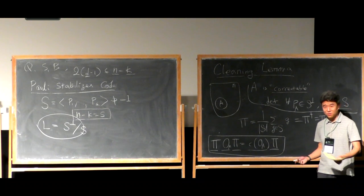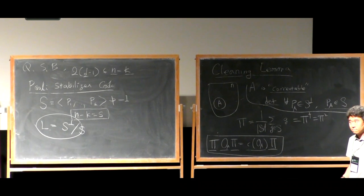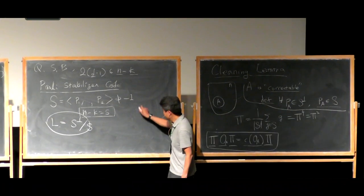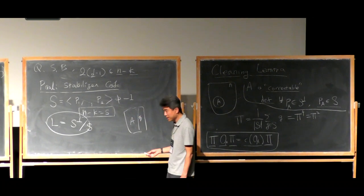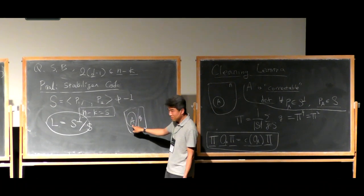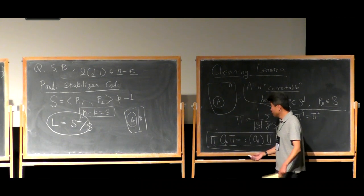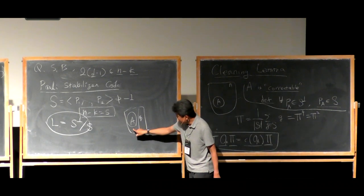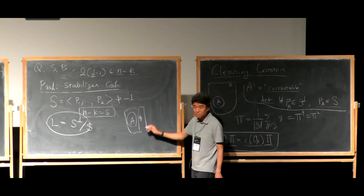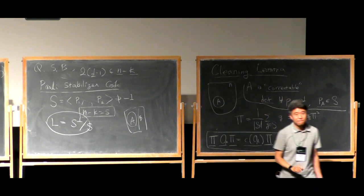An operator supported on A means it may be non-trivial on A but must be identity on B. If you have a bipartite system A and B, you take all matrices acting on A, all matrices acting on B, and take a tensor product of the two matrix algebras. O_A means it may be non-trivial on A but has to be identity on B. A is a subset of qubits.